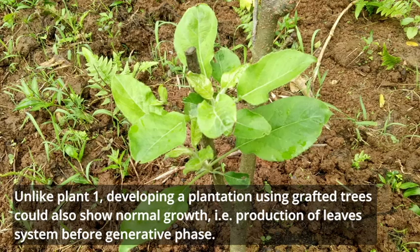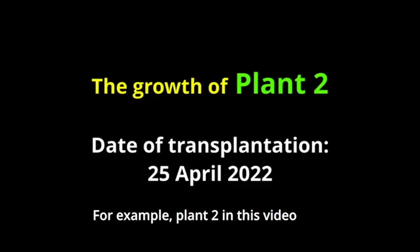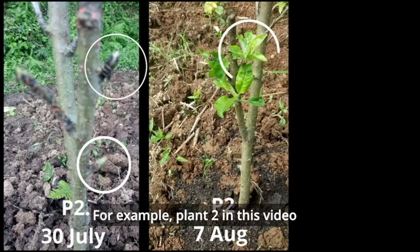Unlike plant one, developing a plantation using grafted trees could also show normal growth — i.e., production of a leaf system before the generative phase — for example, plant two in this video.